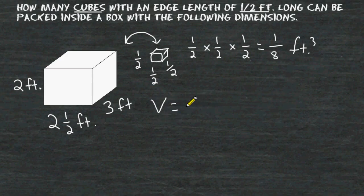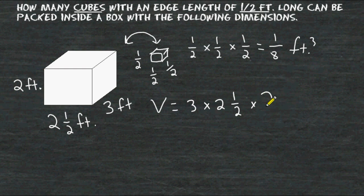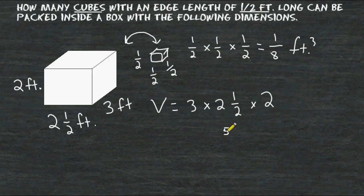So we are going to multiply three feet by two and a half feet by two feet. If one of your dimensions is a mixed number, simply rename that mixed number as an improper fraction. Two and one half may be renamed as five halves.